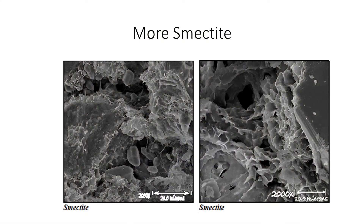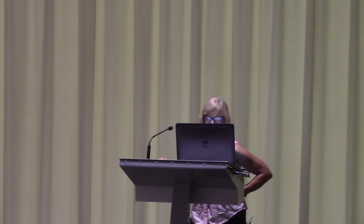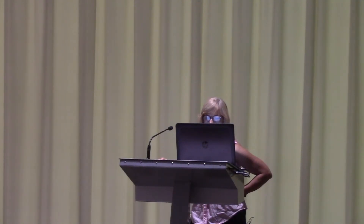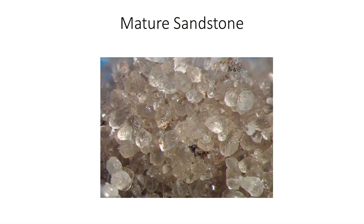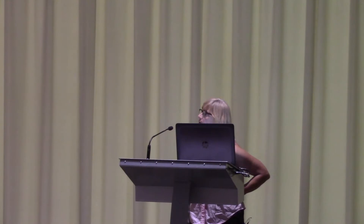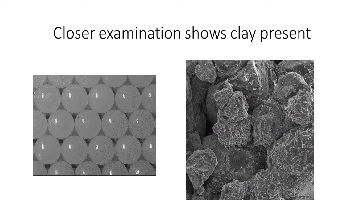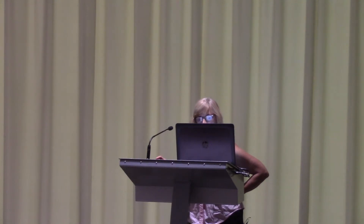We have two more pictures showing similar situations where the smectite is going to cause a fluid flow issue. This is a mature sandstone — the Meissner sand. Again, it's thought to be relatively clean. Looking at it next to our model, we see that it's really not so clean. The size and shape of the grains vary. These are the sand grains.